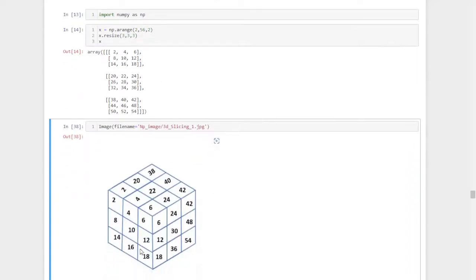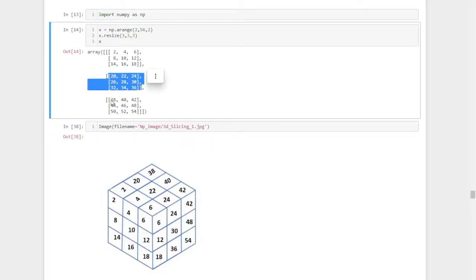This is the pictorial representation of the three-dimensional array we created. It has three layers. The first layer is 2 to 18, the second layer is 20 to 36, and the third layer is 38 up to 54.